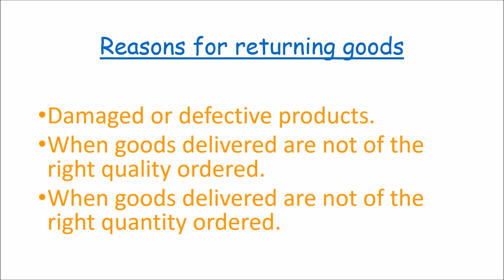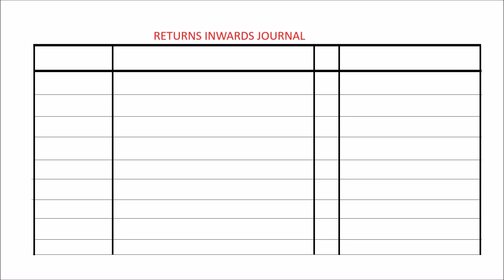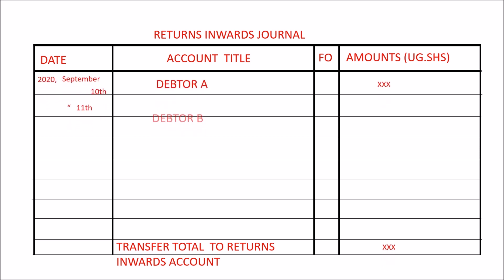The returns inwards journal records goods that have been returned by customers. If you are a businessman and your customer returns goods you had earlier sold to them, these are referred to as sales returns or returns inwards, and they are recorded in the returns inwards journal. The very reasons why you may return goods to your supplier are the same reasons a customer may return goods back to you — so the reasons for returns inwards and returns outwards are the same.